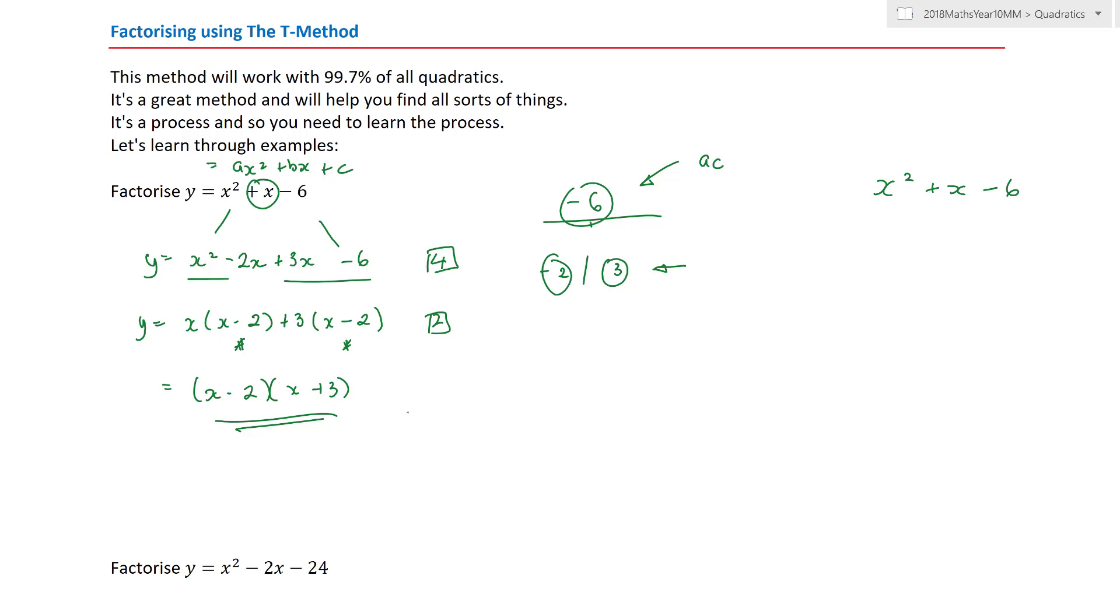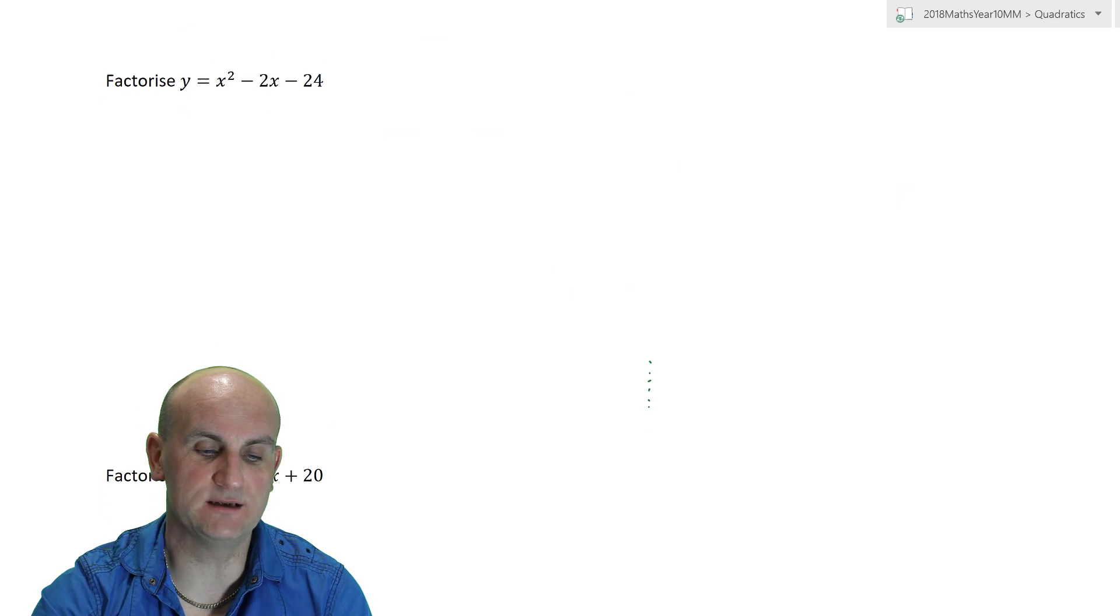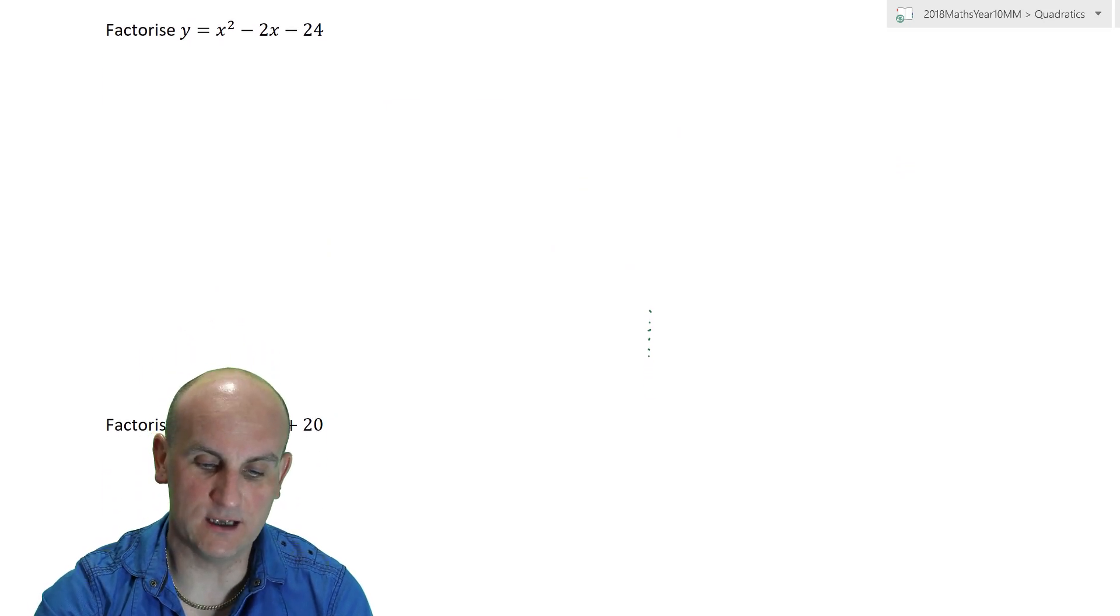Now, I know. There are people screaming at me going, This was so much quicker when I did the cross method. Why would I do it your way? Well, that's fine. Don't do it my way. But, my way is going to work. Even when I don't have the number 1 in front of here. But, I don't want to rush. So, another example. Because, I know that people like learning by examples.